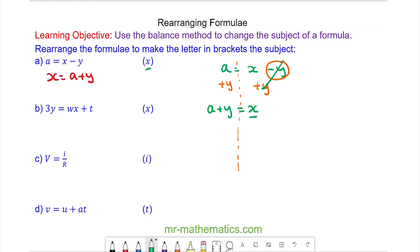For question b we have 3y equals wx plus t and again we've been asked to make x the subject of a formula. I'm going to move the addition of t to the other side and I need to make this addition of t equal to zero so I take t away from both sides because t take away t will cancel.